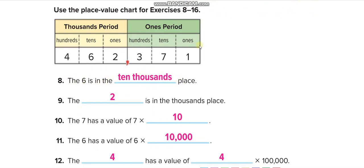The first question: the 6 is in the blank place. Here is six — six is at the ten thousands place. The blank is in the thousands place. What is the thousands place? They said 'thousand,' not 'ten thousand' or 'hundred thousand,' so it means this one — one thousand.